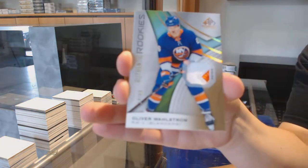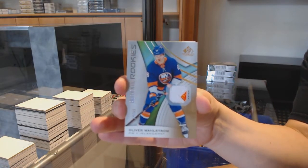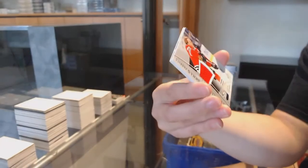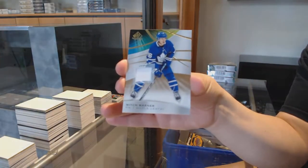Rookie patch number 65 for the New York Islanders, Oliver Wahlstrom. All-star jersey for Chicago, Patrick Kane. And Mitch Marner, base jersey for Toronto.